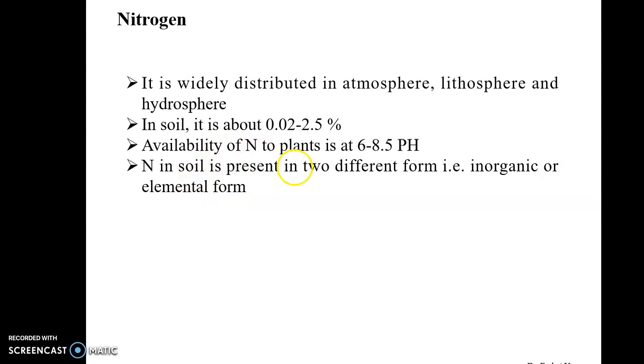Nitrogen in the soil is present in two different forms: organic form and inorganic form. The inorganic form includes ammonia, nitrogen oxides, and nitrogen peroxides.